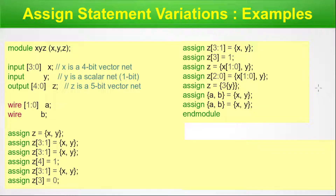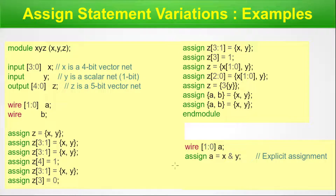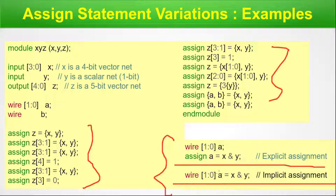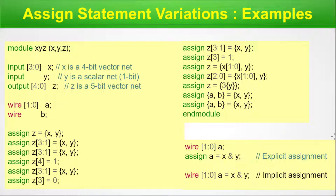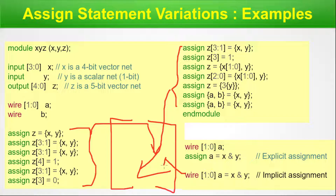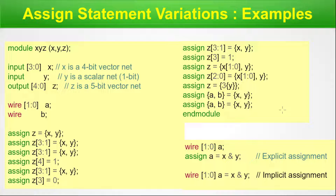To summarize the variations: the explicit assignment uses a separate wire declaration followed by an assign statement, while the implicit assignment combines both into 'wire a = expression'. All these variations — explicit, implicit, continuous, and procedural — can be expected in Verilog coding. When the assign statement is inside a procedural block, it becomes a procedural assignment; otherwise, without any procedural block, it is a continuous assignment.